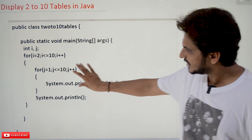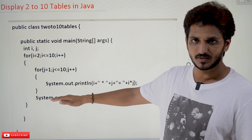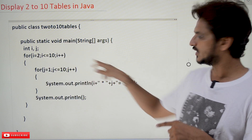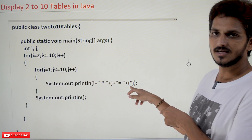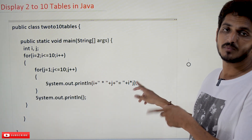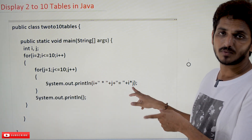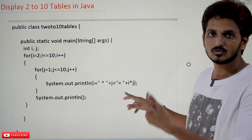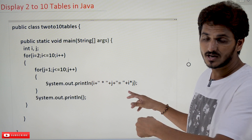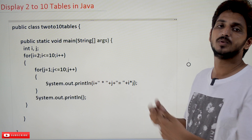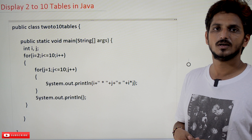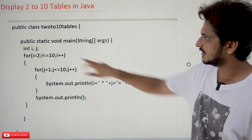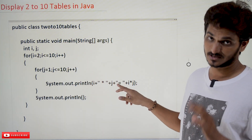After coming out of this inner loop, we give one empty line, and now i becomes 3. We are using this i variable here, so it displays 3×1, 3×2, 3×3, and so on. That is how we use the i variable to display all the tables. You have to concentrate here because this is the first class where we are explaining the nested loops concept in detail.